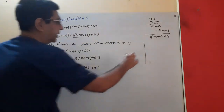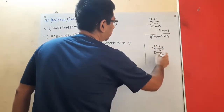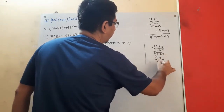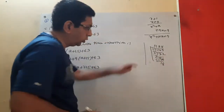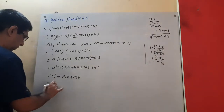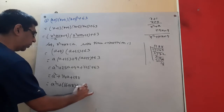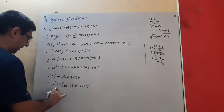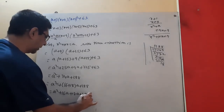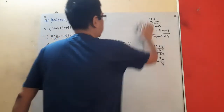Now find factor pairs of 288. We need two numbers that multiply to 288 and add to 34. That's 16 and 18: 16 × 18 = 288, and 16 + 18 = 34. So we split the middle term: a² + 16a + 18a + 288.